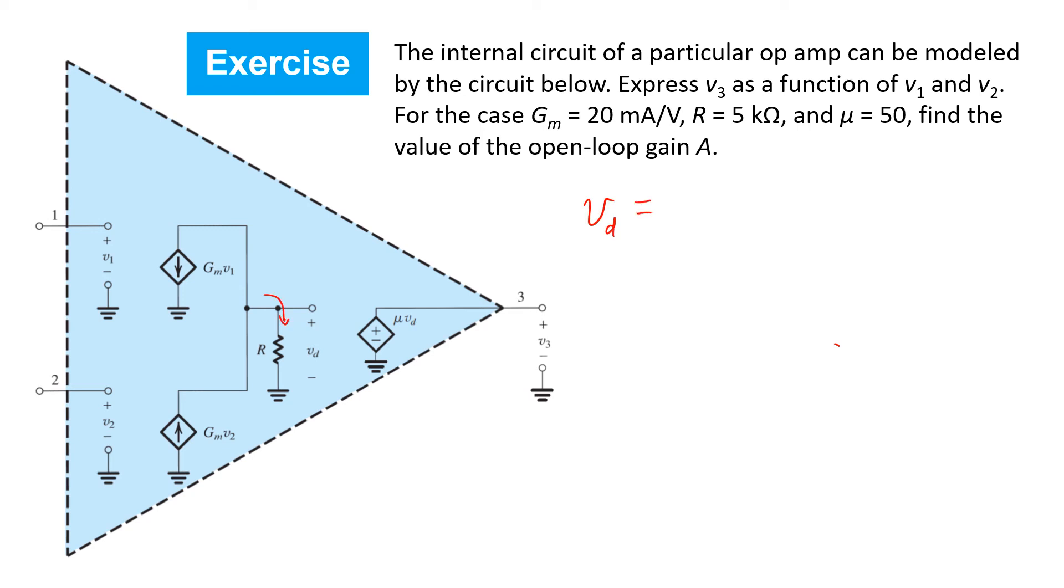vd is the sum of the two currents coming from the current sources passing through the resistor r. So those two currents are gm times v2 minus gm times v1, and those are both passing through the resistor r to form the voltage vd. This can be combined to an expression like this.